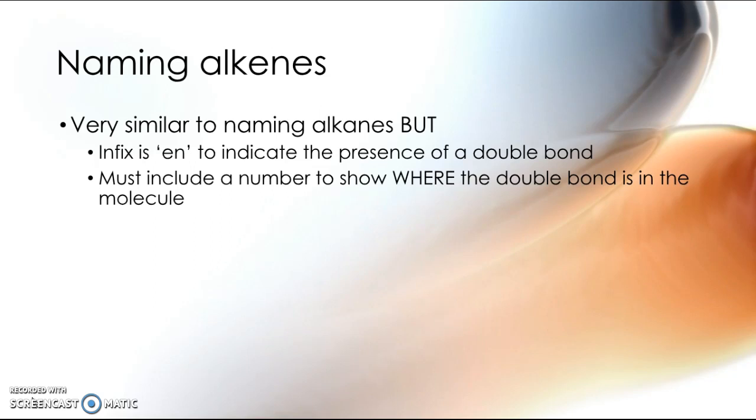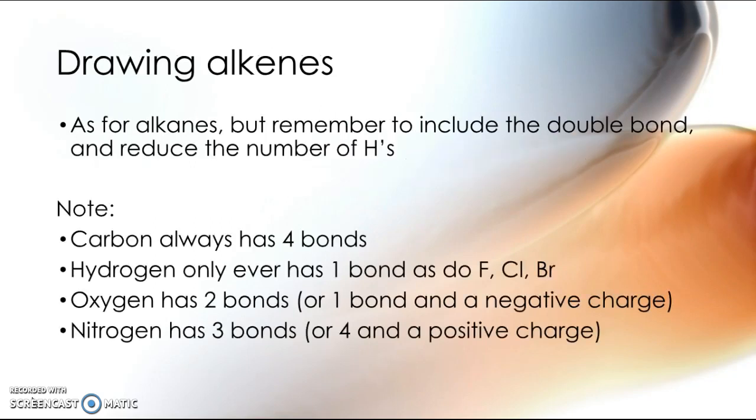Similarly, when we come to draw alkenes, we draw them in a very similar way to drawing alkanes but we need to include a double bond. For every double bond that's there, there are two less hydrogens that can be drawn into the molecule. So the general formula is always CnH2n, so twice as many hydrogens as carbons.